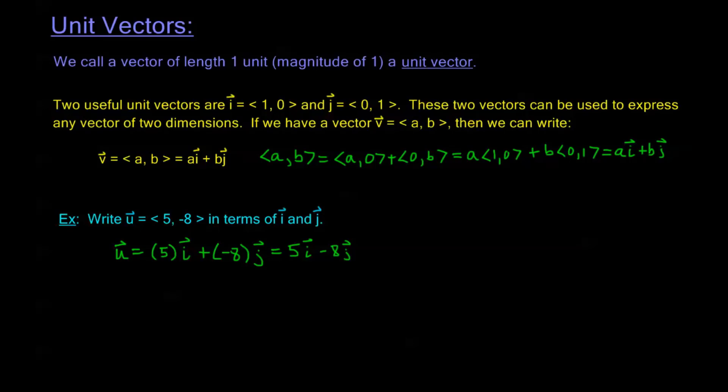If you need to turn a vector that's already in component form into a vector in terms of the unit vectors I and J, you're just going to take those components—the horizontal component becomes the scalar for I and the vertical component becomes the scalar for J. Let's take a look at one more example.